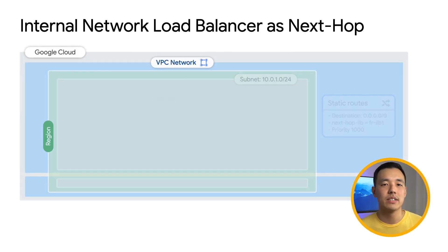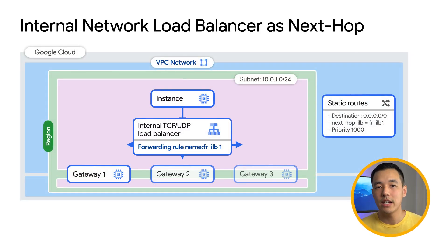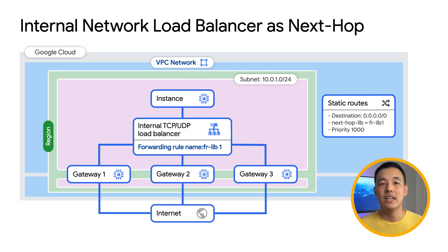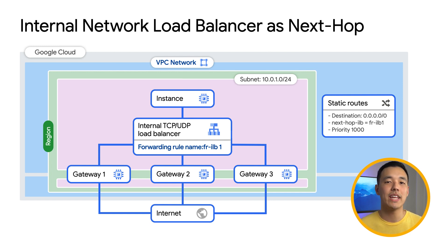Moving on to the internal network load balancer, we have several updates to share. We'll start off with an enhancement when using the internal network load balancer as the next hop for routing. You can create a static route which sends traffic to an internal network load balancer as the next hop. In this example, we're using the internal network load balancer to balance traffic between multiple NAT gateways that route traffic to the internet.